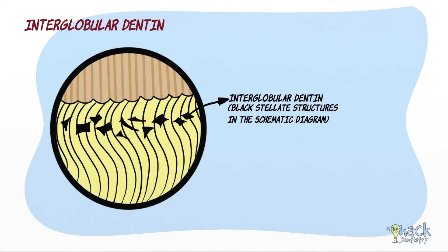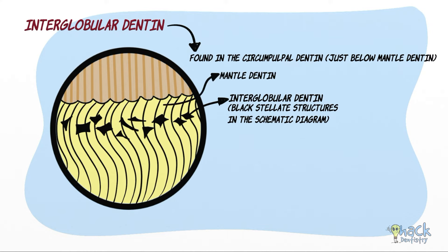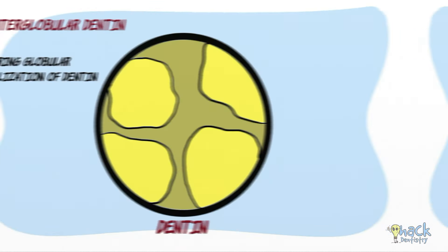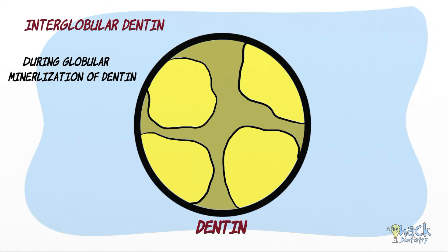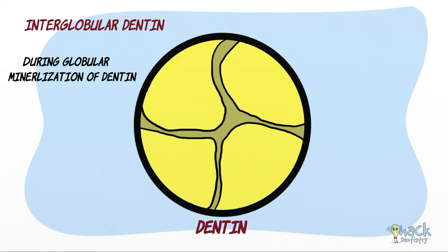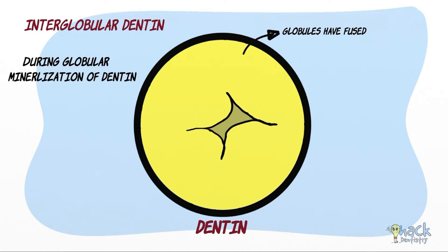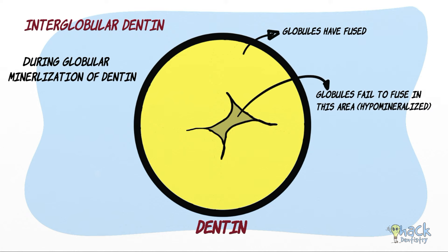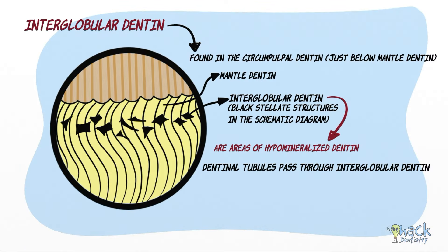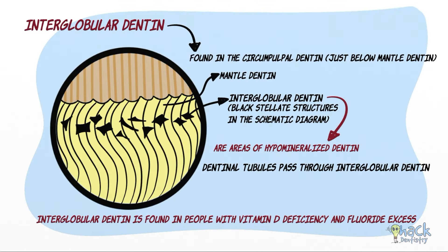Interglobular dentine is usually found in the circumpulpal dentine just below the mantle dentine and represents areas of hypomineralized dentine. During globular mineralization, globules or concentric masses of calcification — called calcospherites — enlarge and fuse with adjacent globules. When these globules fail to coalesce or fuse, hypomineralized zones form between them, and these are called interglobular dentine. Dentinal tubules freely pass through interglobular dentine, which is usually found in teeth of people with vitamin D deficiency or fluoride excess.